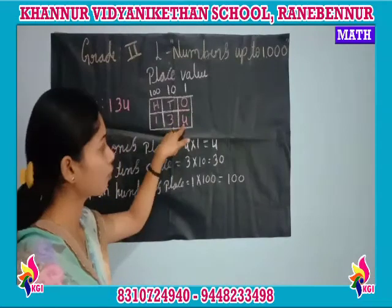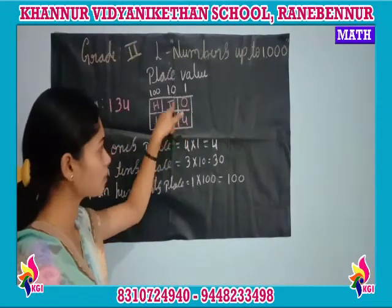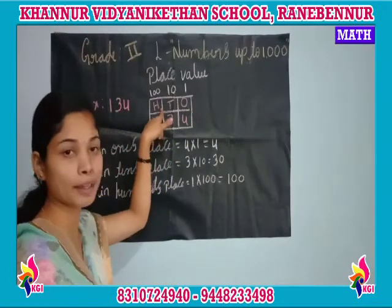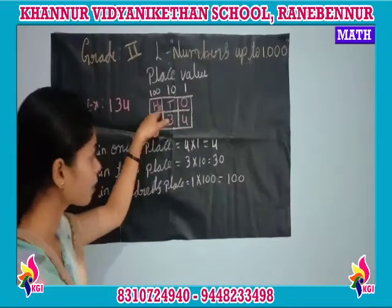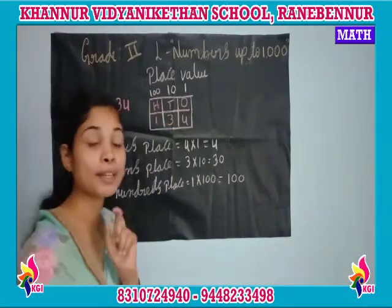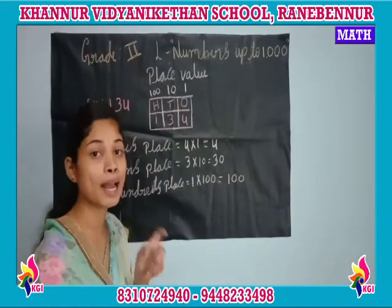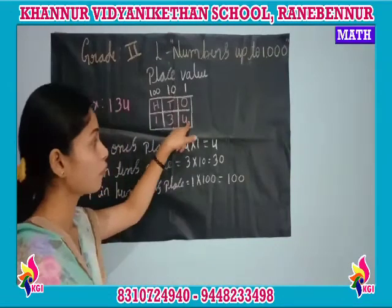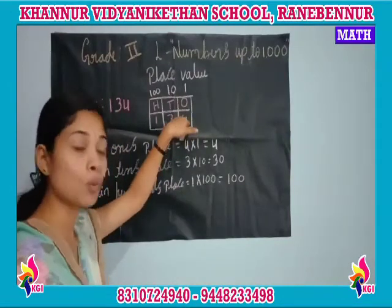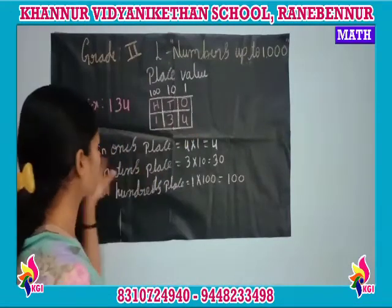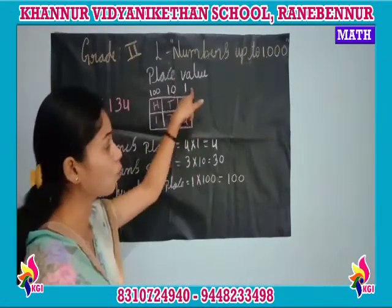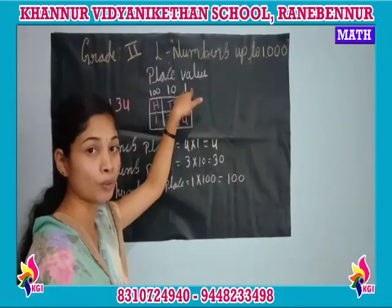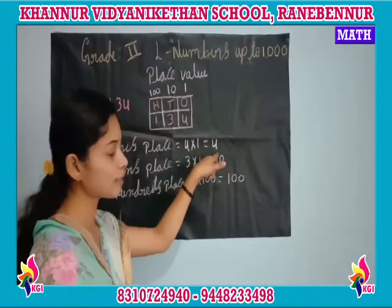Place value chart: 4 will come in 1's place, 3 will come in 10's place, 1 will come in 100's place. Every digit will have its own value. 4 will come in 1's place, so it is multiplied by 1. 4 ones are 4.